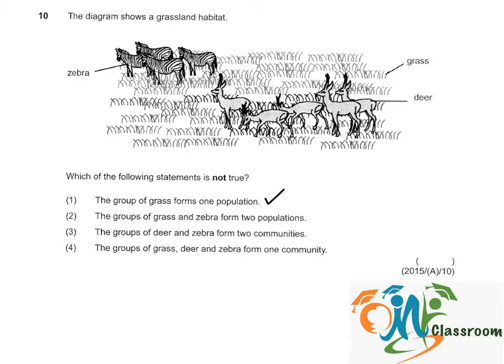Option 3: the groups of deer and zebra form two communities — this is incorrect. It should be that the groups of deer and zebra form two populations.